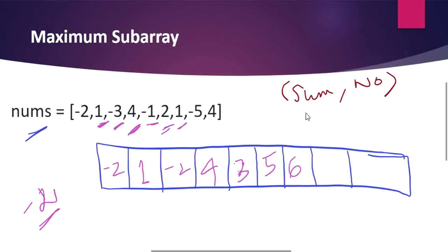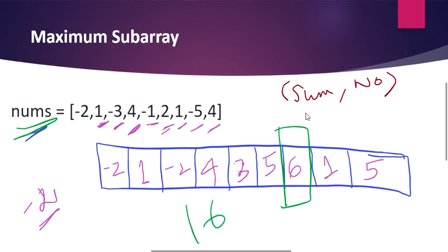Moving on to 1: adding 5 plus 1 gives 6, and 1 alone is lesser, so we fill 6. Moving on to minus 5: adding minus 5 with 6 gives 1, which is higher than minus 5, so we fill 1. Finally, moving to the last 4: adding 1 plus 4 gives 5, which is higher than 4 alone, so we fill 5. The maximum sum encountered in this array is 6, which is the greatest sum of all subarrays in the given integer array. We return the maximum value present in our DP array.